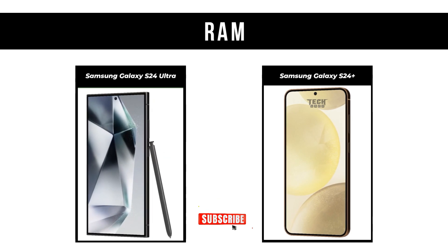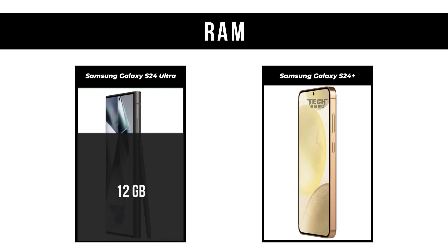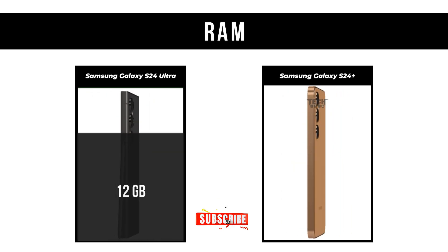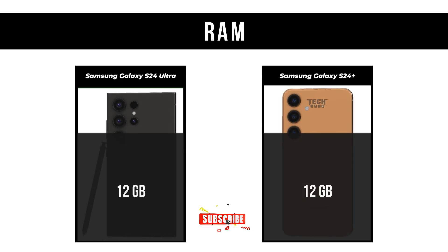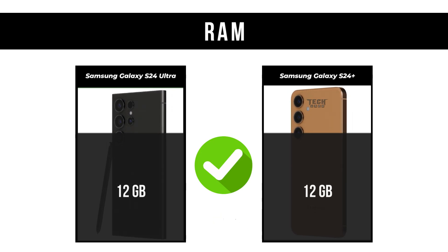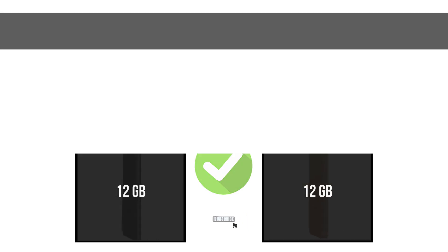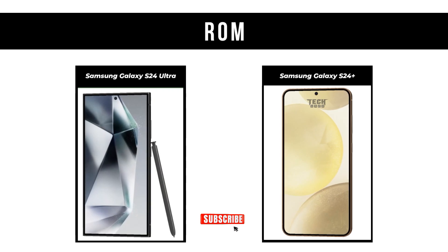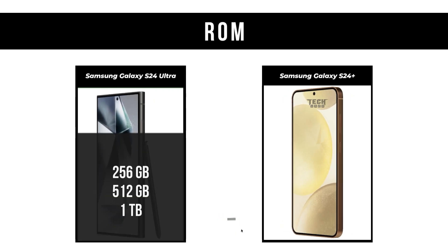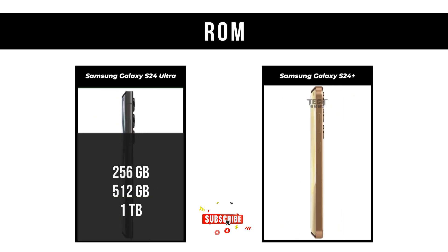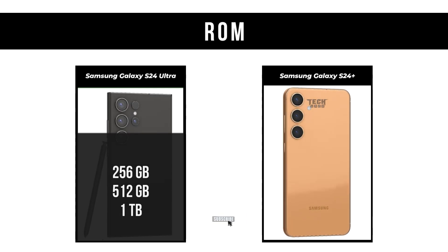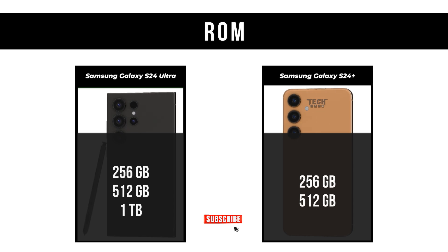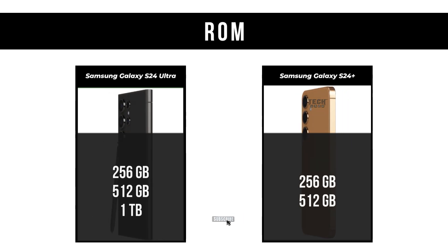RAM: Samsung Galaxy S24 Ultra is 12GB, Samsung Galaxy S24 Plus is 12GB. ROM: Samsung Galaxy S24 Plus is available in 256GB and 512GB storage options.